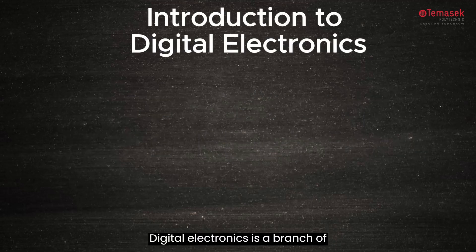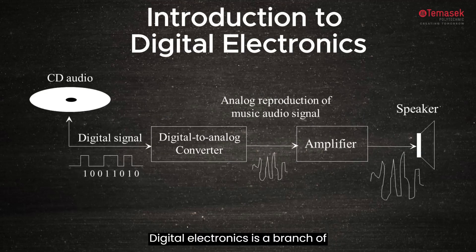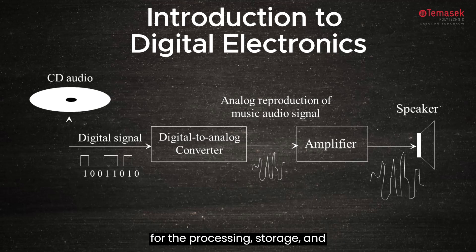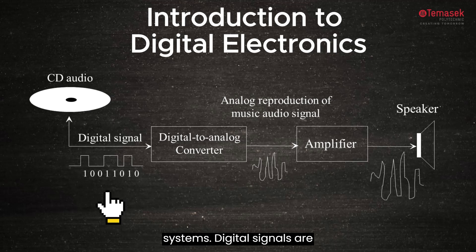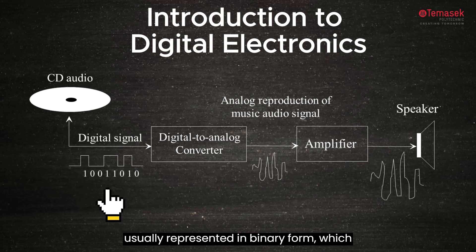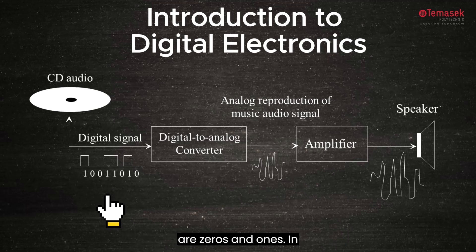Digital Electronics is a branch of electronics that uses discrete signals for their processing, storage, and transmission of information in electronic systems. Digital signals are usually represented in binary form, which are zeros and ones.